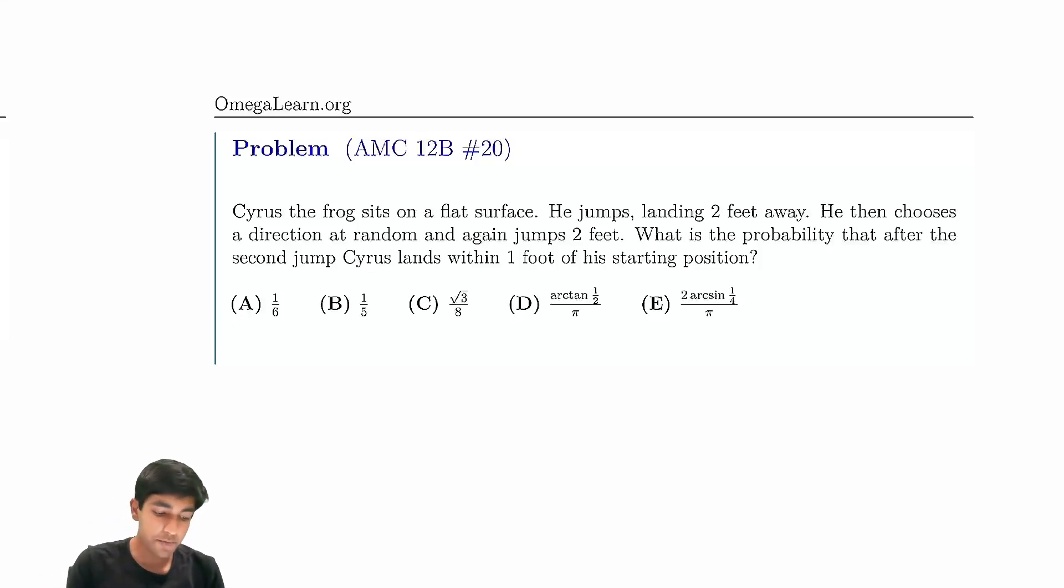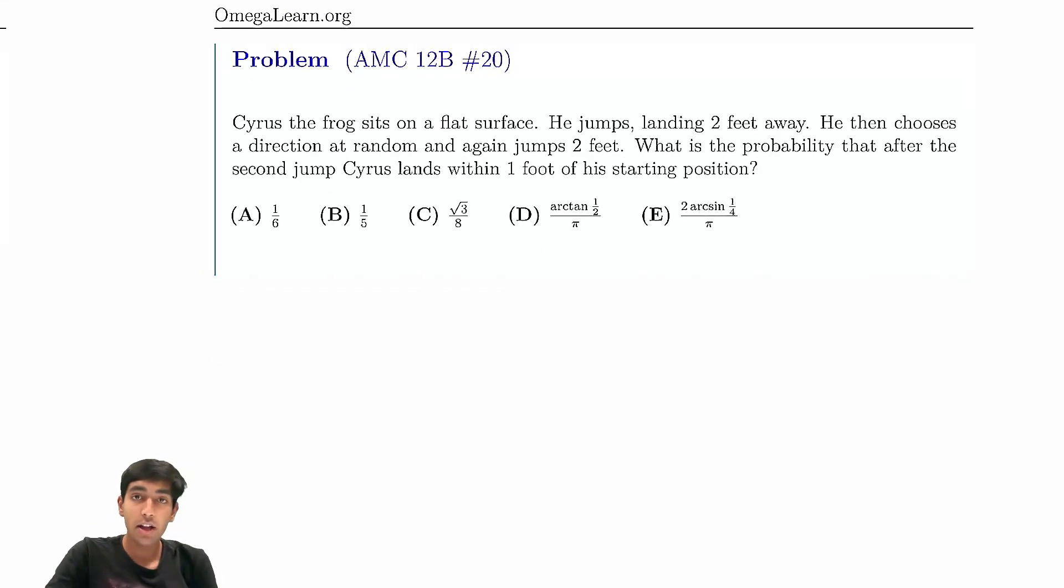Let's now solve number 20 on the 12B. Cyrus the frog sits on a flat surface and jumps landing two feet away. He then chooses another direction at random and again jumps two feet. What's the probability Cyrus will land within one foot of the starting position?